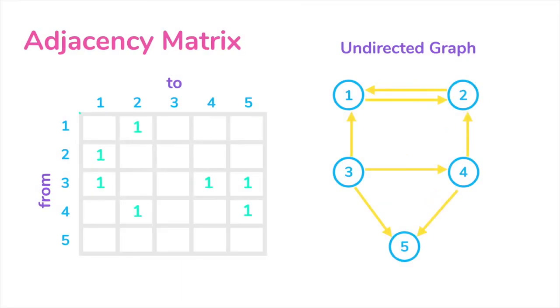If we have an undirected graph, the matrix would be symmetrical because undirected graph means that all the edges are actually bi-directional.